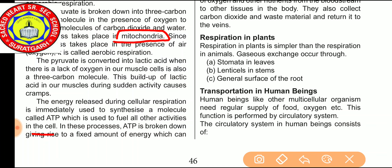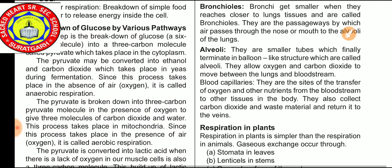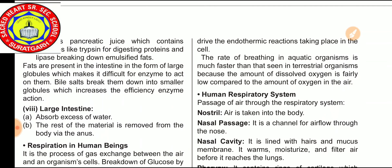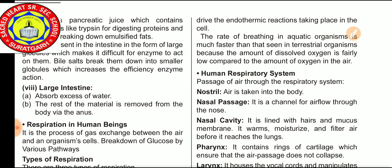ATP is also known as the energy currency of the cell — adenosine triphosphate — which can drive endothermic reactions in the cell. The rate of breathing in aquatic organisms is much faster than in terrestrial organisms, because the amount of dissolved oxygen is fairly low compared to the amount of oxygen in air.